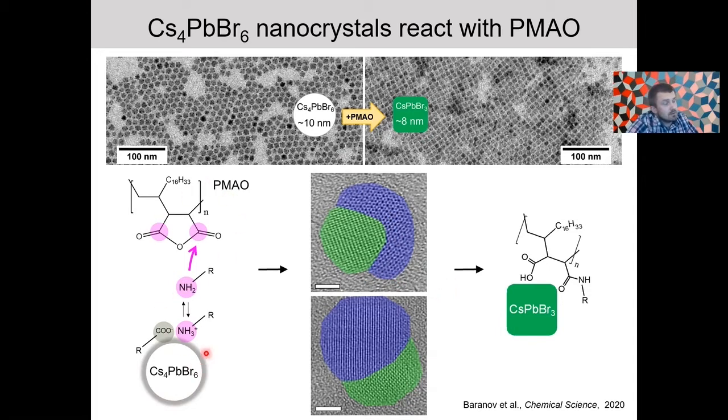And the chemistry involved in this interconversion consists of the amine from the surface of nanocrystals reacting with an anhydride ring for nucleophilic addition, which results in the ring opening and formation of maleamic acid fragment. And that acidification promotes interconversion and we believe stabilizes the resulting particles.